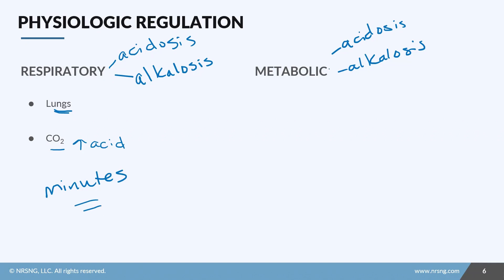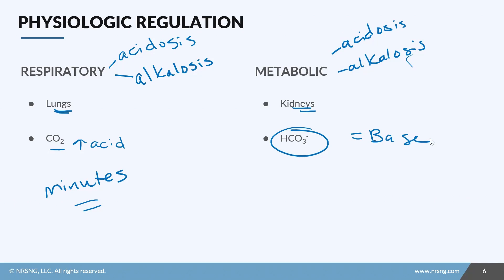The second regulator is metabolic regulation, controlled by our kidneys. They will excrete or retain bicarb based on what's going on in the body. If the body is too acidic, the kidneys hold onto bicarb — remember, bicarb equals base. If it's too alkaline, the kidneys excrete more bicarb. The problem is this takes a few days for metabolic compensation to fully kick in. We'll discuss each regulation method when we look at the four main conditions: respiratory acidosis, respiratory alkalosis, metabolic acidosis, and metabolic alkalosis.